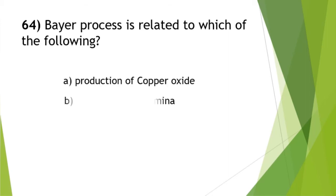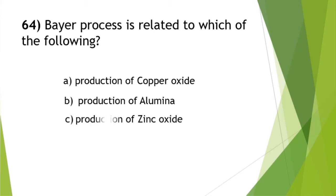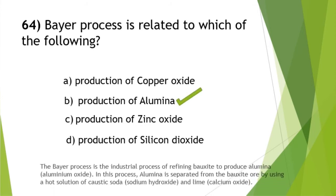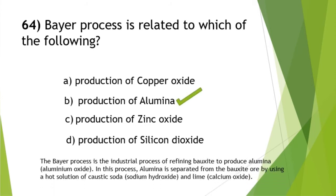Bayer's process is related to which of the following? The answer is option B — production of alumina. The Bayer process is the industrial process of refining bauxite to produce alumina (aluminum oxide). In this process, alumina is separated from bauxite ore using a hot solution of caustic soda (NaOH) and lime (calcium oxide).